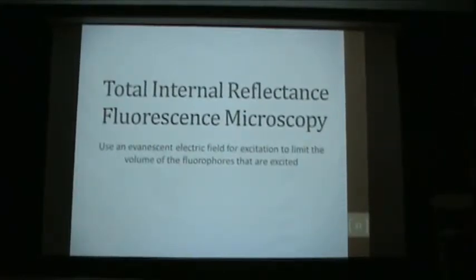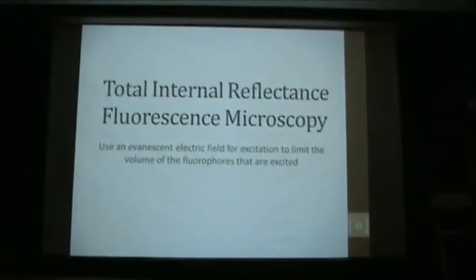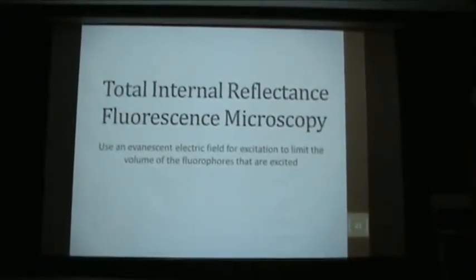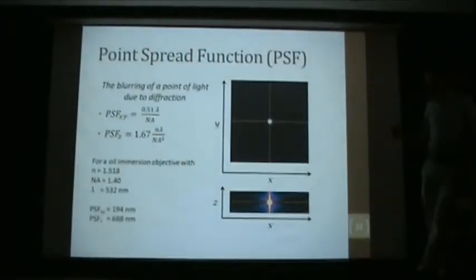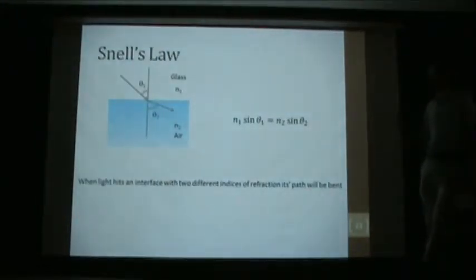Another technique is total internal reflection fluorescence microscopy, or TIRF. Here the light is totally internally reflected off the cover glass, and only an evanescent electric field penetrates into the sample — only about 100–150 nanometers. So only the sample within 100 nm of the cover glass is excited, and all signals come from that 100 nm slice. That 600 nm Z resolution we had is now collapsed to 100 nm — we're beating the diffraction limit in Z. The downside is your sample has to be within 100 nm of the cover glass.